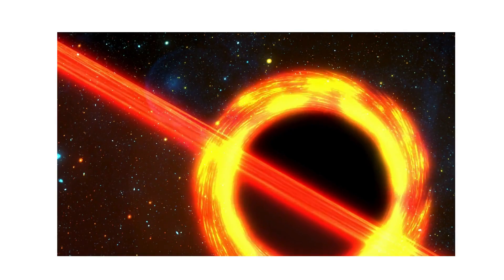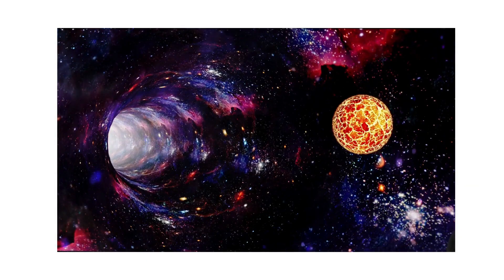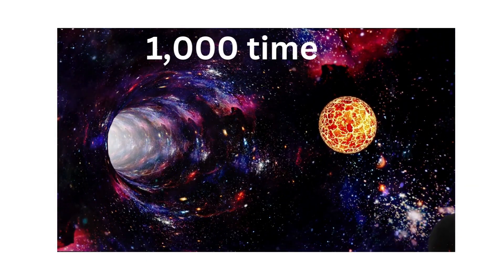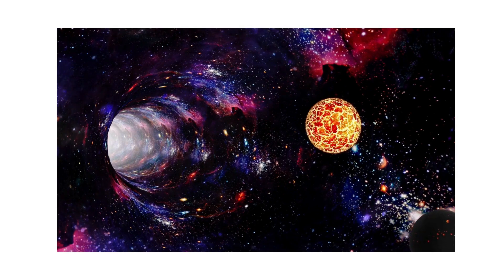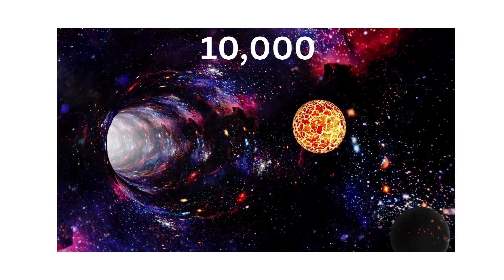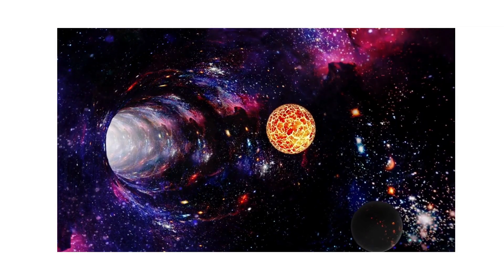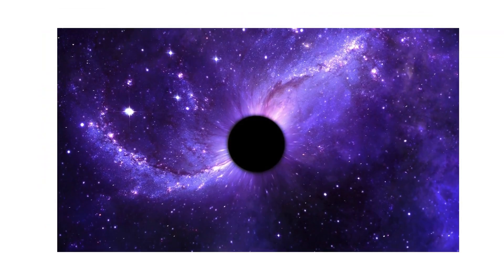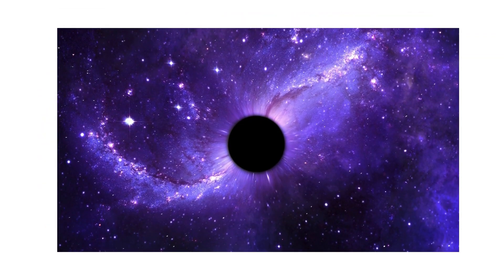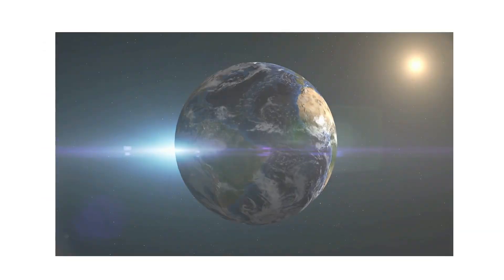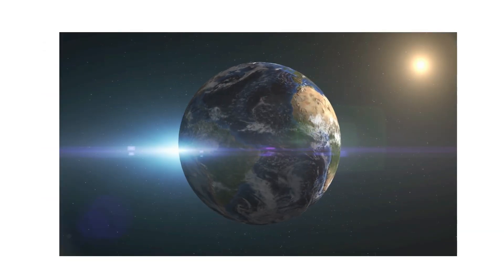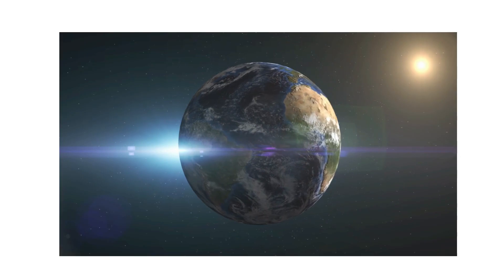For supermassive black holes, the safe margin is much larger. A quasar emitting a thousand times the luminosity of the Milky Way could sterilize planets tens of thousands of light years away if the radiation is directed along a jet. If Earth were inside such a beam, even a separation on galactic scales could be dangerous. Fortunately, no known active quasar is close enough or aligned with us to pose a threat.